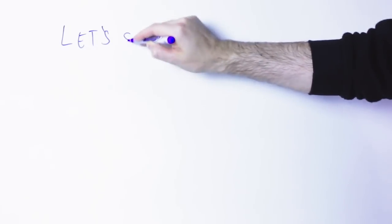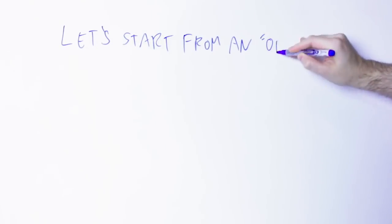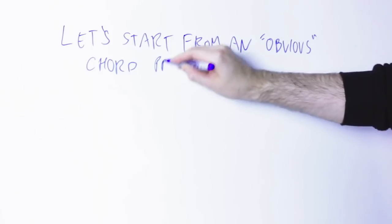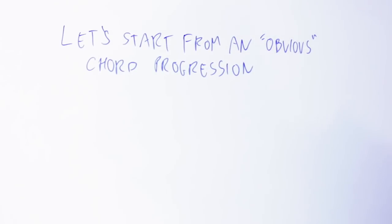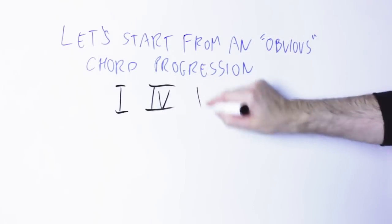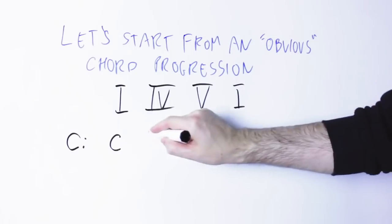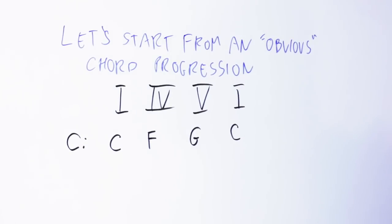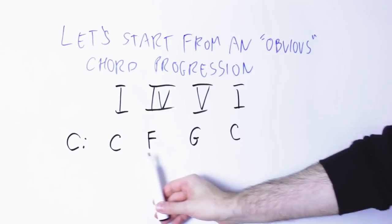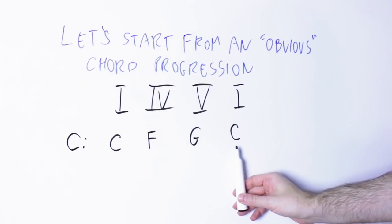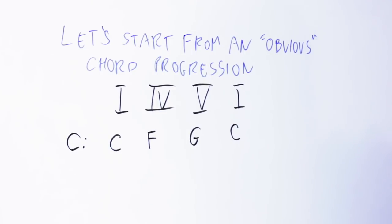To understand augmented sixth chords we need to start from the most obvious chord progression ever. If we are in C major, the most obvious chord progression ever is 1, 4, 5, so C, F, G and back to C. Yeah, not the most interesting one, right?